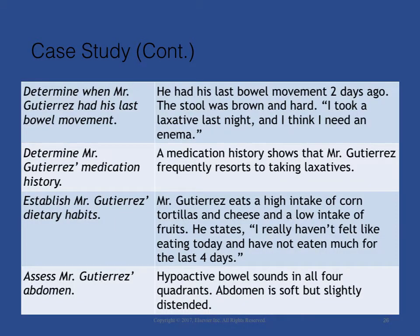In order to determine an accurate nursing diagnosis, Vicki must assess Mr. Gutierrez's abdomen, determine when he had his last bowel movement, and review his medication history. She must also establish his dietary habits and routines.